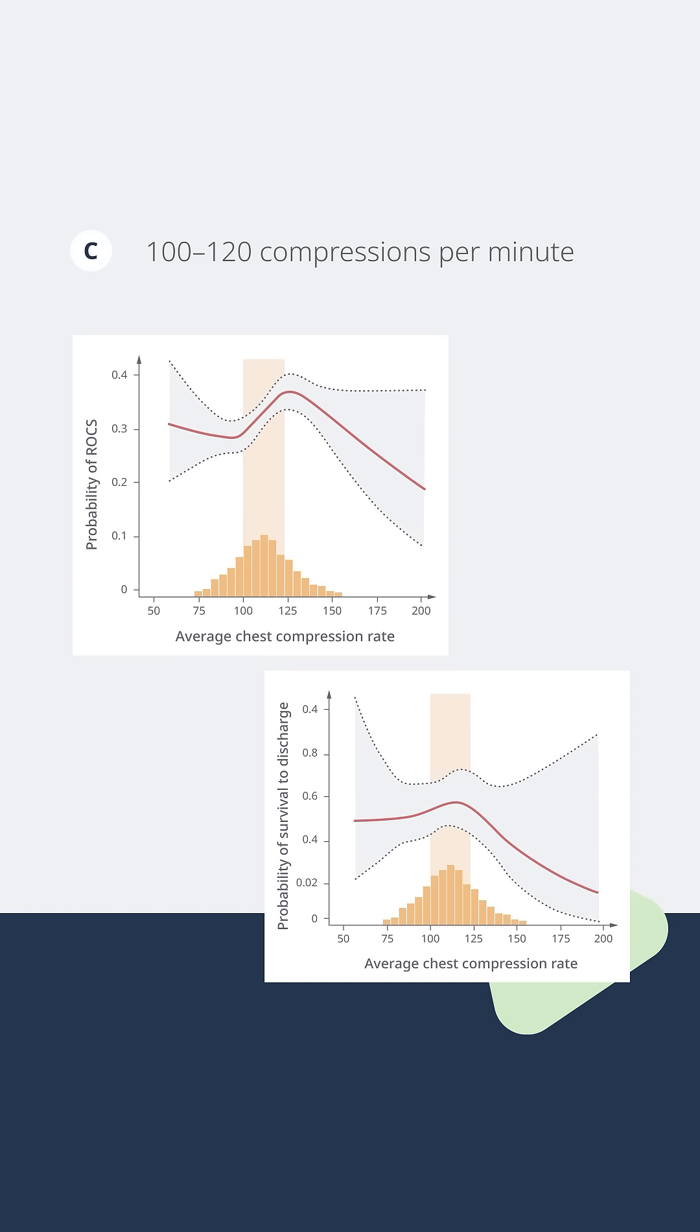In this study, they looked at the mean rate of chest compressions among a large sample of cardiac arrest patients, and they found that the patients who had compressions at a rate of roughly 100 to 120 had the highest probability of ROSC, which stands for return of spontaneous circulation, and they also had the highest probability of survival to hospital discharge, or having a longer-term positive outcome.